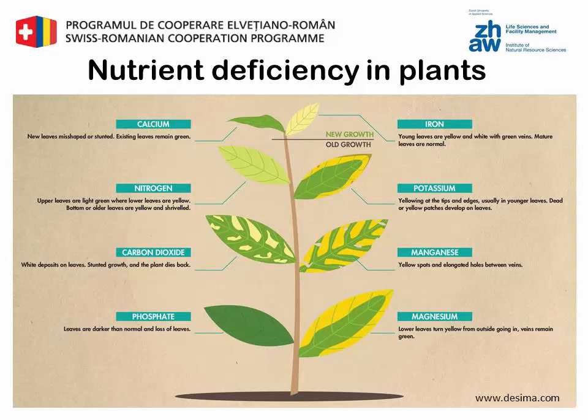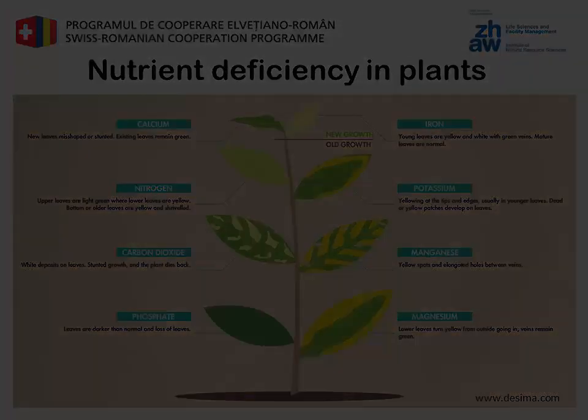Calcium deficiency: young leaves are hooked in form, necrotic margins only on young leaves, and there is blight on young leaves. Iron deficiency: new leaves develop a light yellow color almost between veins, and later entire leaves become yellow.